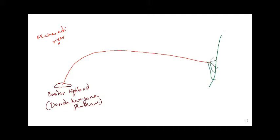This is the delta. Now let's figure it out. After originating from the Buster Highland, Dhanda Karanya Plateau, it drains Chhattisgarh plains.